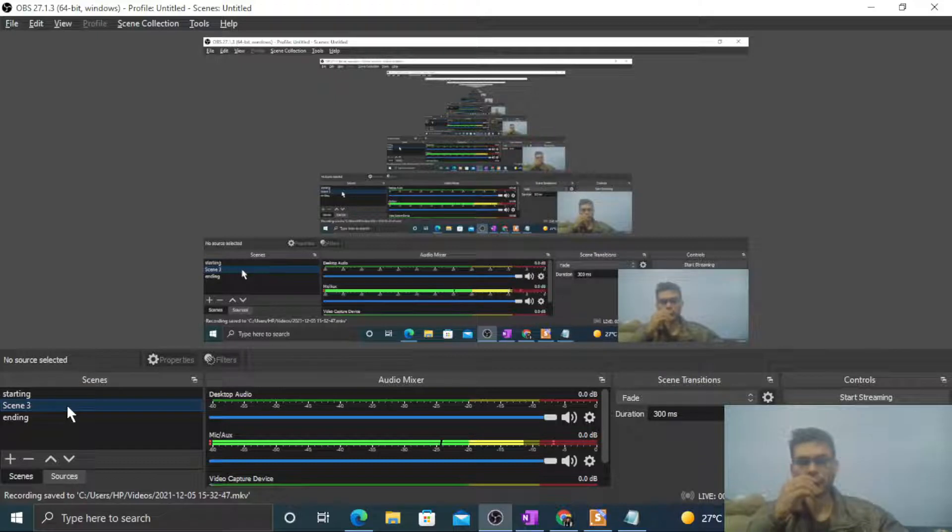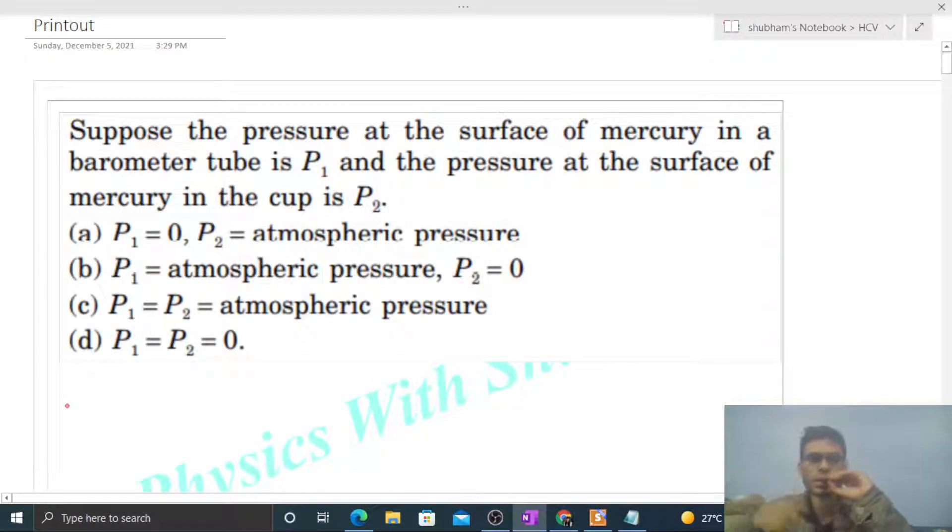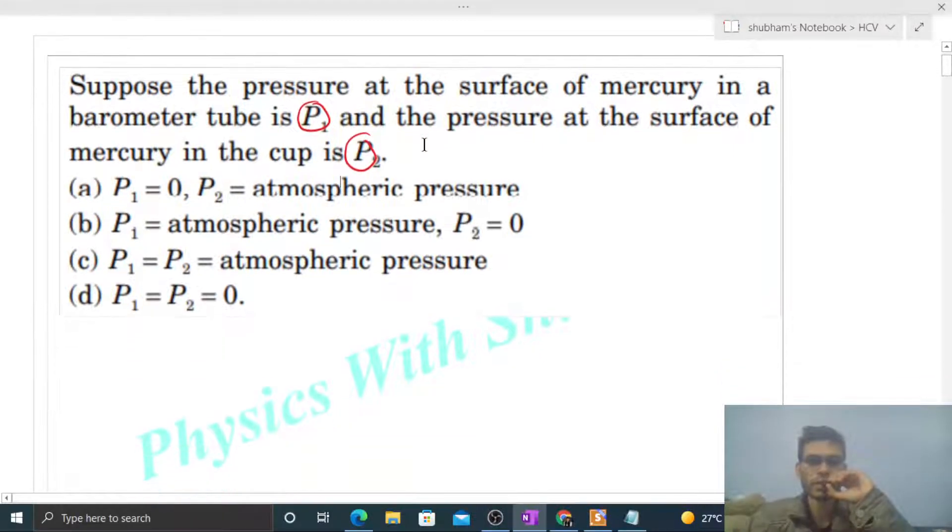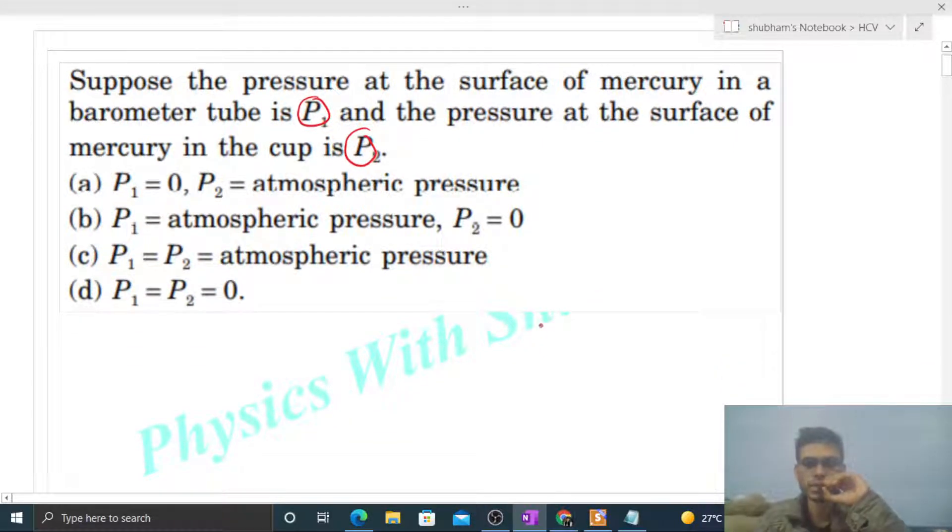Okay, hi everyone. So today let's discuss this interesting problem. It says suppose the pressure at the surface of mercury in a barometer tube is P1 and the pressure at the surface of mercury in the cup is P2. So we have to find out the value of P1 and P2.